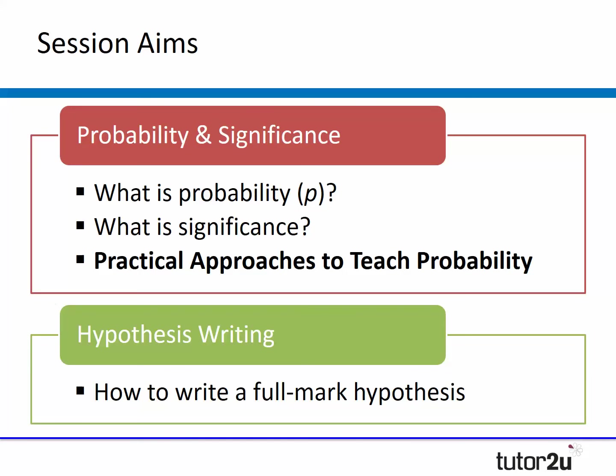In terms of today's session, we have two key aims based on feedback from teachers. First, looking at the difference between probability and significance — a term students often get confused with. And then more importantly, some practical ways to teach probability in the classroom. We'll finish off with hypothesis writing, with two activities to help your students write a full mark hypothesis.